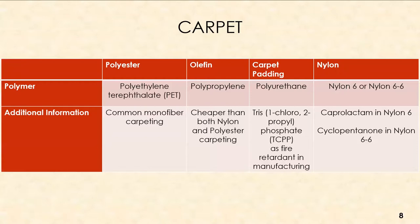For carpet polymers: polyester uses polyethylene terephthalate (PET) and is the most common monofiber carpeting today. Olefin is made using polypropylene and is cheaper than both nylon and polyester. For nylon, the polymer used is either nylon 6 or nylon 6-6, and depending on which was used in manufacturing, your chromatographic profile will show either caprolactam, cyclopentanone, or different byproducts — acting as indicators of which polymer was used.